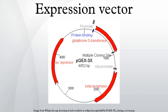For example, growth hormone extracted from pituitary glands harvested from human cadavers had caused Creutzfeldt-Jakob disease in patients receiving treatment for dwarfism due to prion contamination, and viral contaminants in clotting factor VIII isolated from human blood had resulted in the transmission of viral diseases such as hepatitis and AIDS. Such risk is reduced or removed completely when these proteins are produced in non-human cell lines.